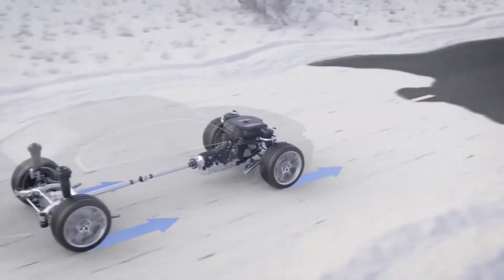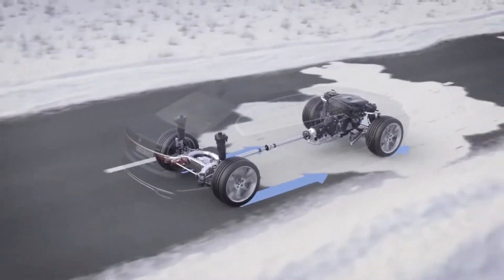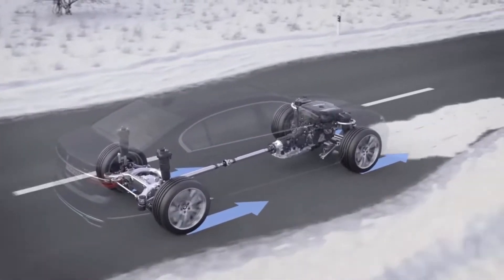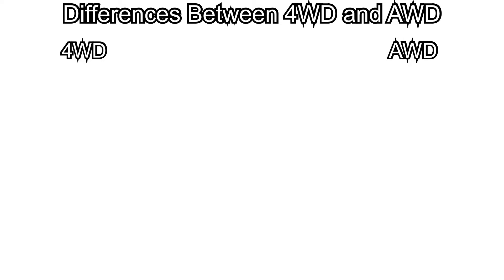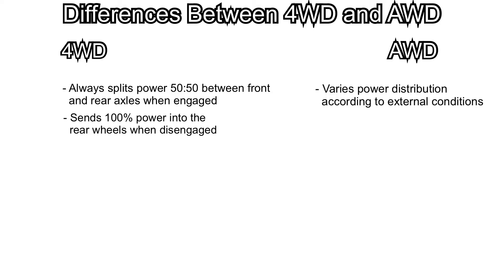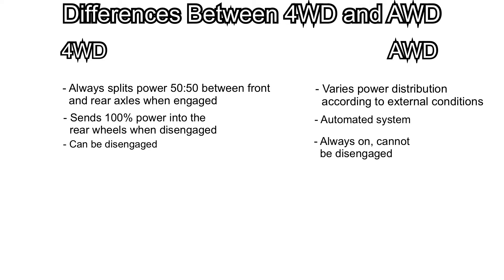All wheel drive works on the same principle as four wheel drive in that power is delivered to all four wheels at the same time. However, the major distinction between the two systems comes with the manner in which power is distributed. When engaged, four wheel drive splits the power in a 50-50 fashion across the front and rear axles; when disengaged, all power gets diverted into the rear wheels. By contrast, all wheel drive constantly varies the power distribution between the front and rear axles according to external road conditions.